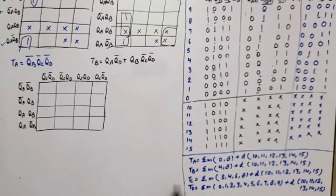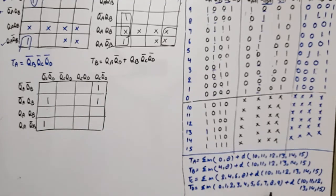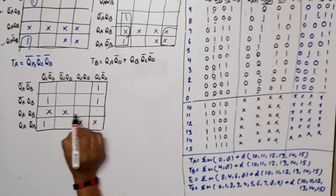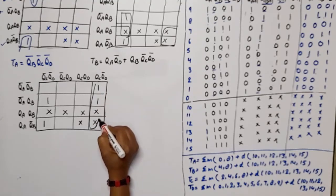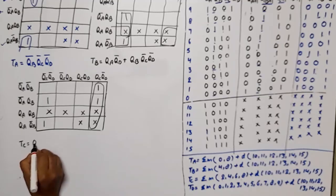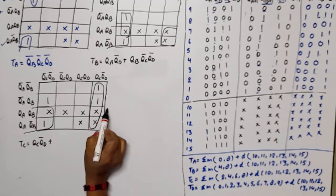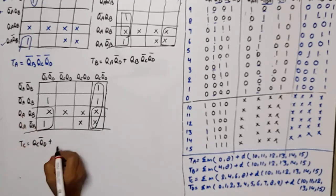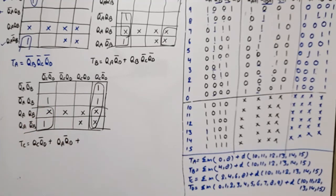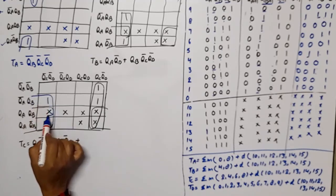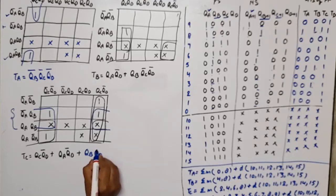For the K-map of TC, the minterms are 2, 4, 6, and 8, with don't cares at 10 through 15. Simplifying gives one quad. TC equals QC · QD̄.